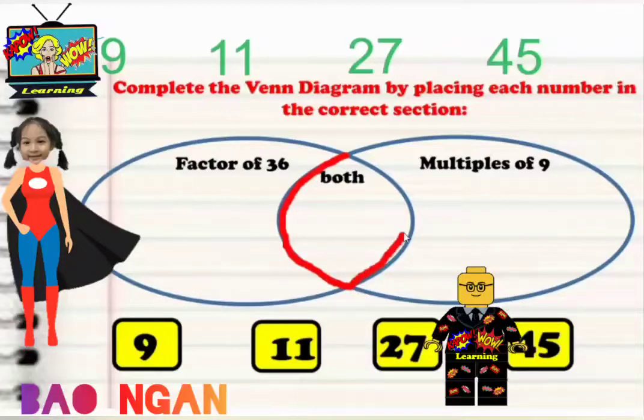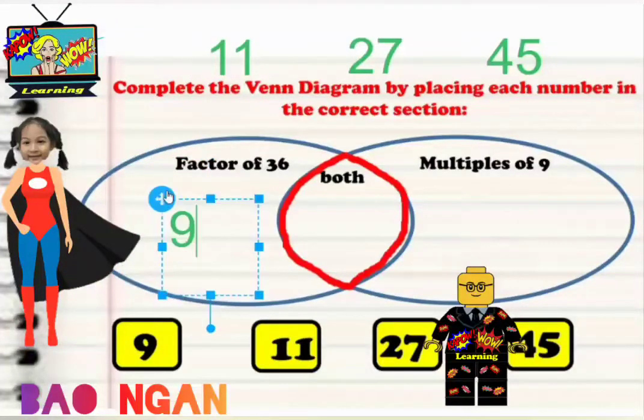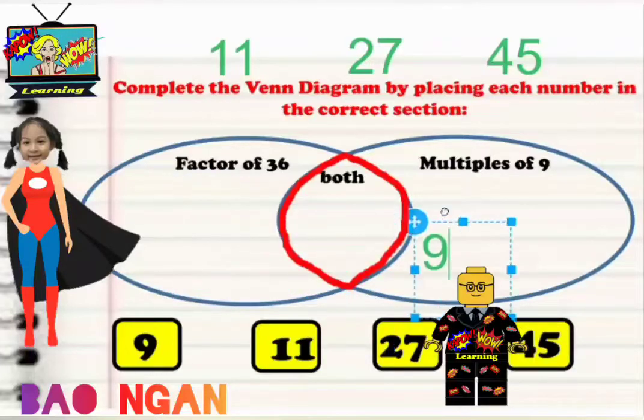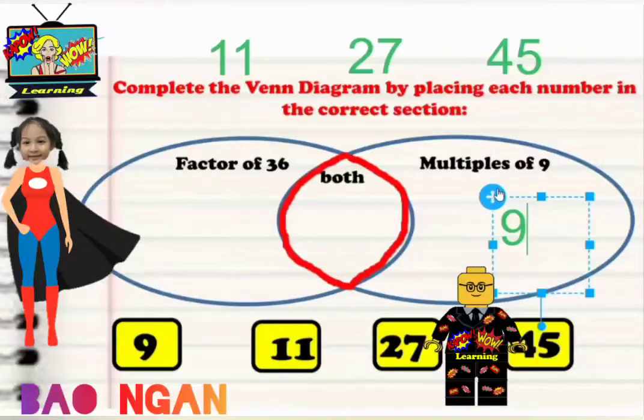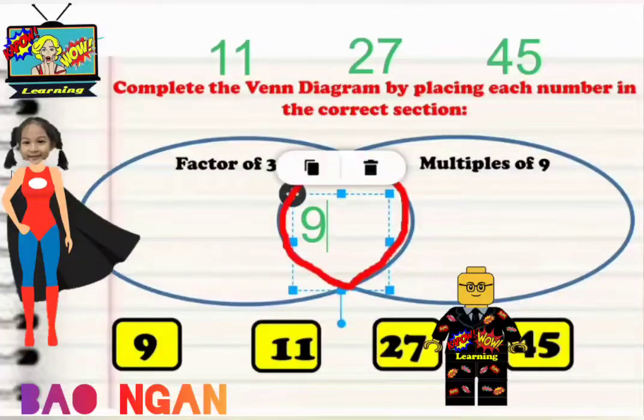it goes in the middle. And there's one or two tricky numbers today, so we need to take our time. Right, Bounian, are you ready? 9. Is 9 a factor of 36? Yeah, it is. 4 times 9 equals 36, so 9 is a factor of 36. Is 9 a multiple of 9? Yeah. So where do we put it? Both. Yeah, we put it in both, which is in the middle.